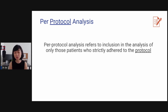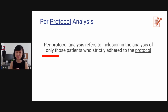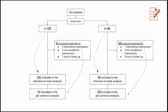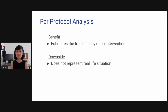Per protocol analysis refers to the inclusion and analysis of only those patients who strictly adhere to the protocol. Going back to the figure, only those who completely received their treatment are included: 96 in group A and 95 in group B. Typically in research studies, you don't choose one or the other — they do both to show robustness in the analysis, one reflecting the real-life situation and the other showing the true treatment effect. The benefit of per protocol analysis is that it estimates the true efficacy of an intervention, while the downside is it does not represent a real-life situation.